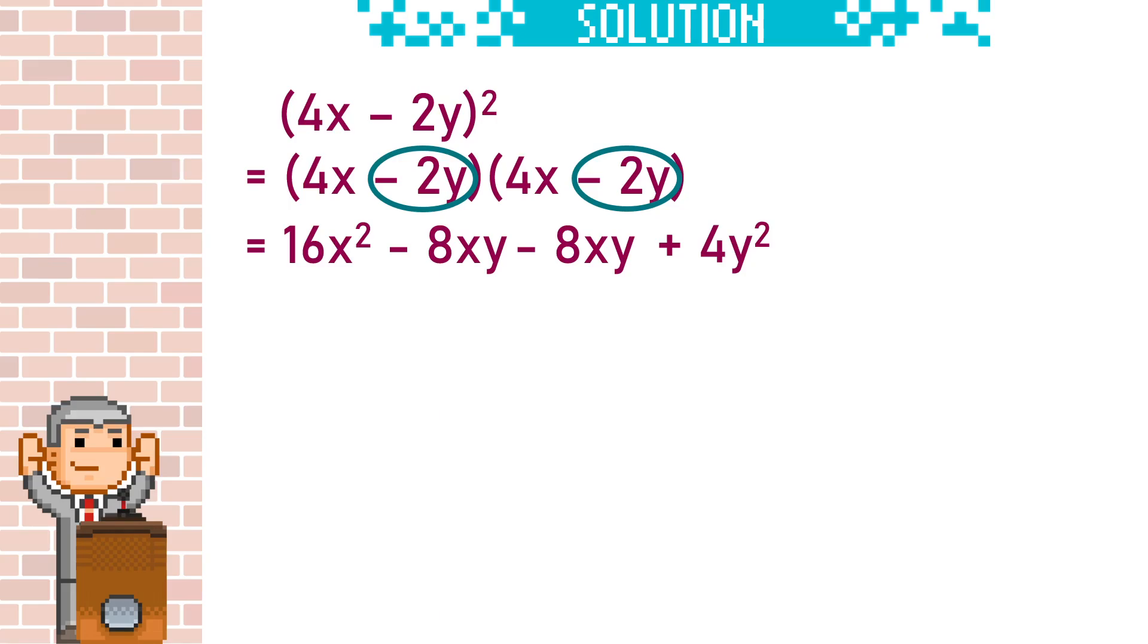Notice there are like terms here. We've got minus 8xy, minus 8xy, so add them together, you get minus 16xy.